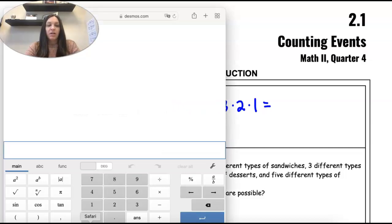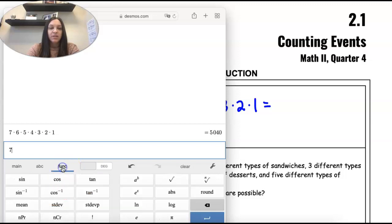Okay, so if you go in your calculator, there's a couple ways to do this. So you can type them all in, one by one. It's also a function. An exclamation point is a function. It's a factorial.